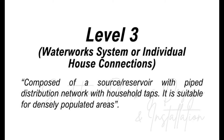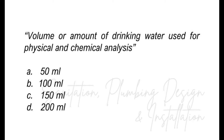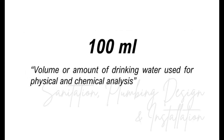Level 2 or communal faucet systems is composed of a source/reservoir with piped distribution networks and communal faucets, located no more than 25 meters from the farthest house, suitable for rural or urban areas densely clustered to justify a simple pipe network. It is composed of a source or reservoir with pipe distribution network with household taps, suitable for densely populated areas — A, level 1; B, level 2; C, level 3; D, level 4? The answer is level 3 or waterworks system or individual house connections. What is the volume of drinking water used for physical and chemical analysis? A, 50 mL; B, 100 mL; C, 150 mL; D, 200 mL? The answer is 100 milliliters.